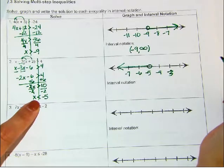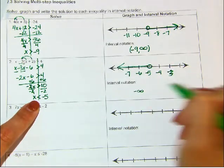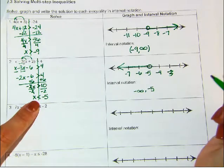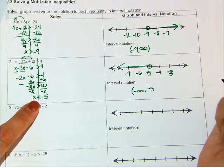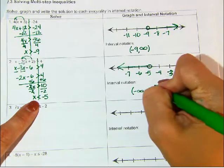Now, for interval notation, I look at what the left side of my graph is doing. And it goes on to negative infinity. The right side stops at negative 5. Parenthesis for infinity always. And then it does not include 5. So it's also a parenthesis.